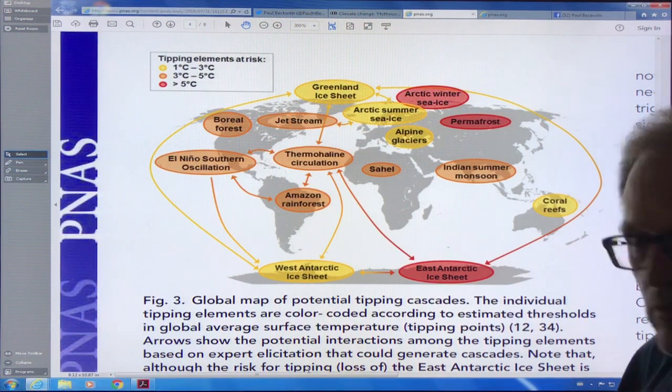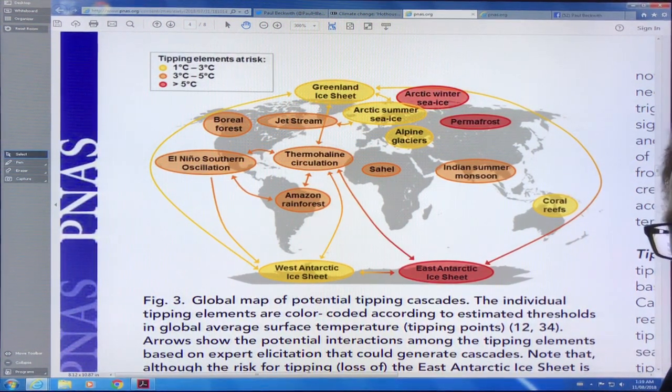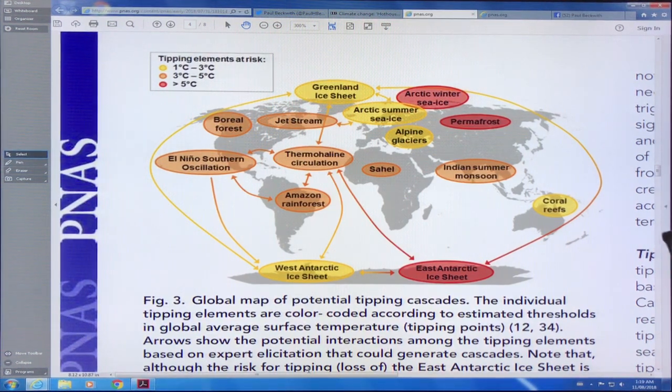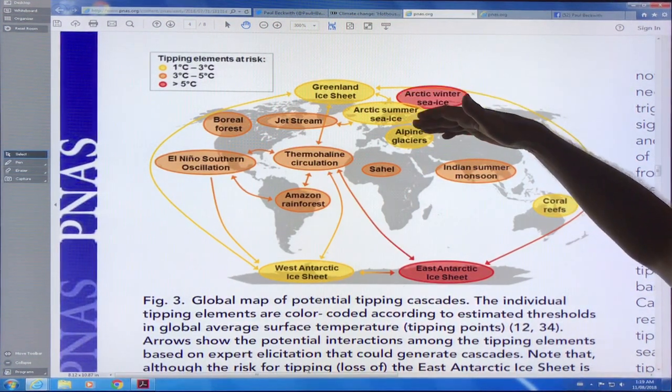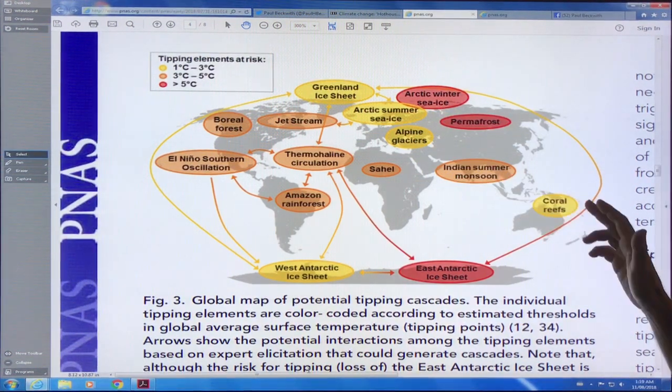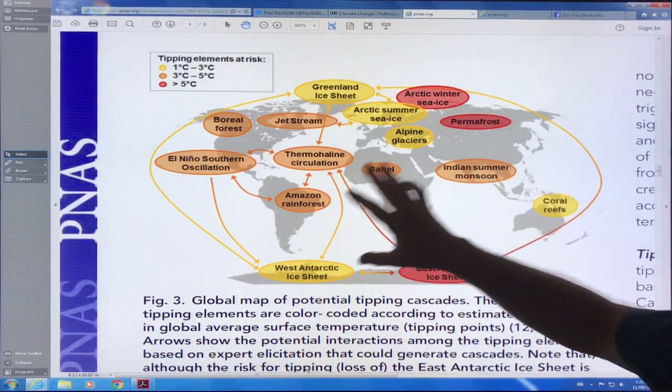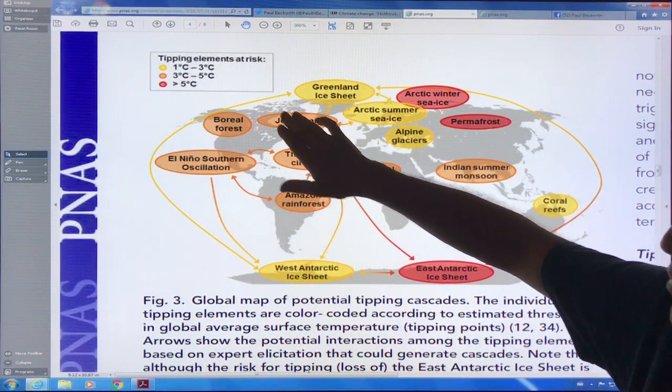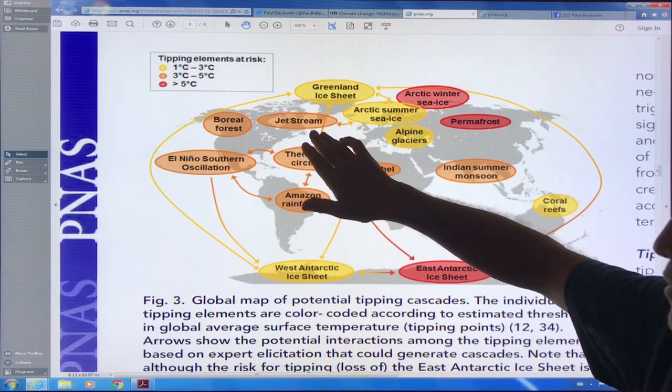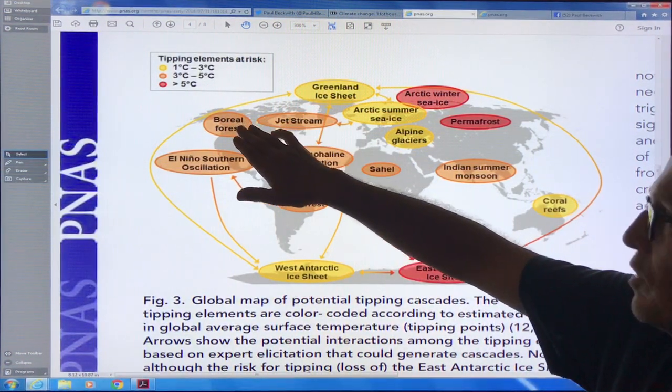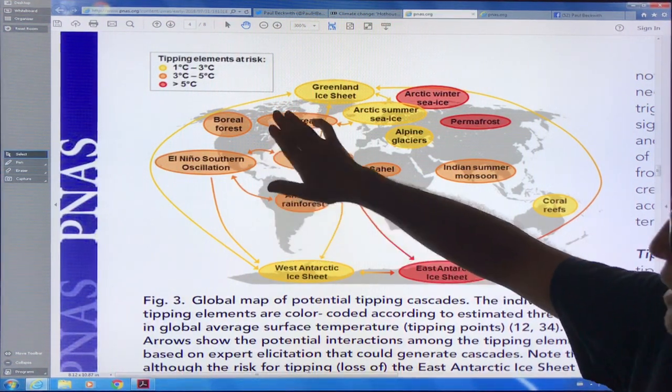The Arctic summer sea ice is rapidly heading out. In this paper, they still think it first vanishes in the summer for this blue ocean event in 2040 or 2050. Most of us looking at the plots think that's too conservative. We're likely to lose all of this summer sea ice probably within five years. Alpine glaciers rapidly losing ice, coral reefs - over half the reefs in Australia have been killed already. Those things are all there.